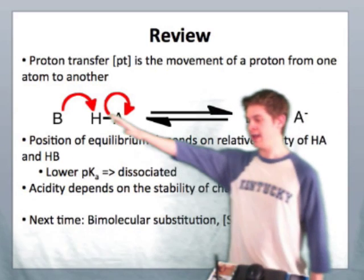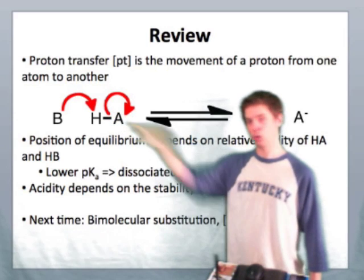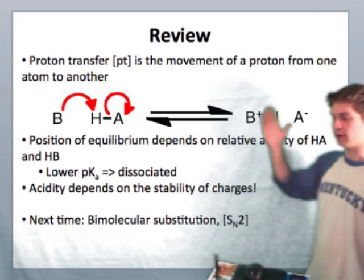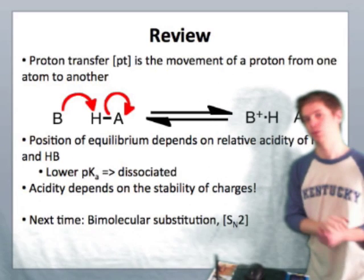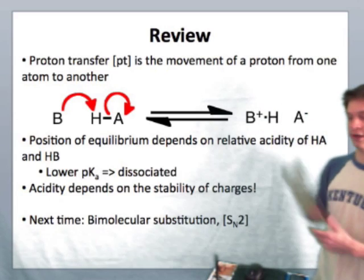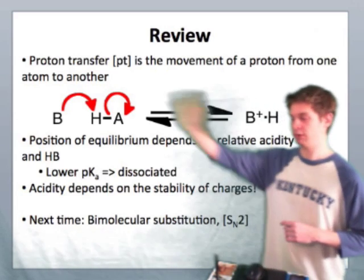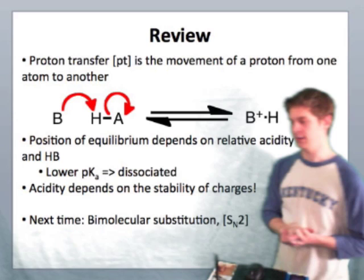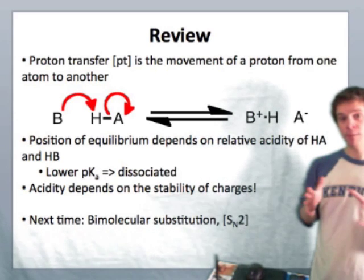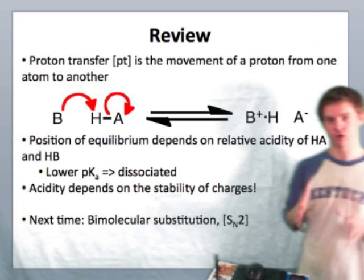So if HA is more acidic, has a lower pKa than HB, then we would favor this side of the equilibrium in which A is dissociated. If the opposite is true, then we would favor the dissociation of HB and we would lie on this side of the equilibrium.